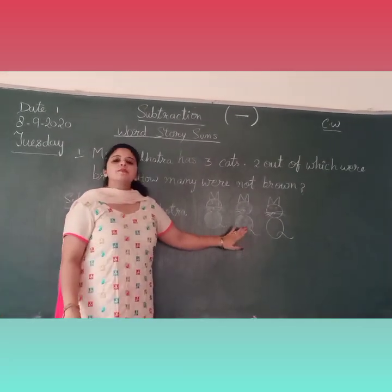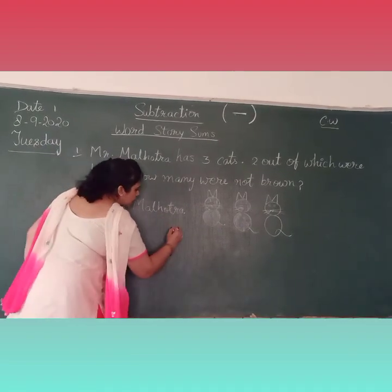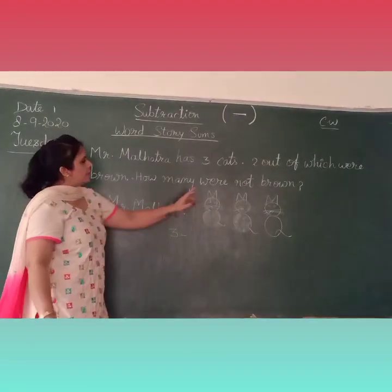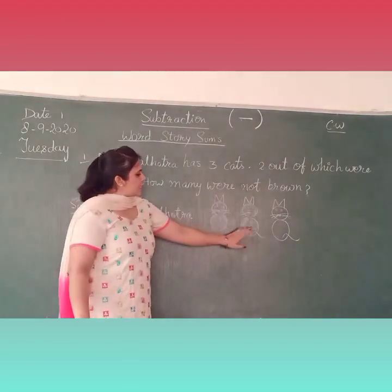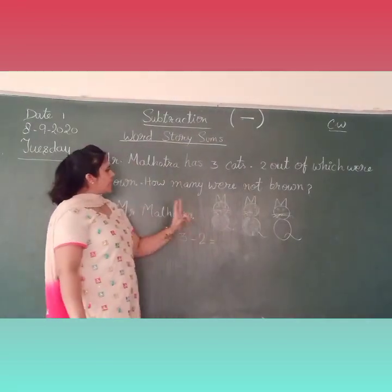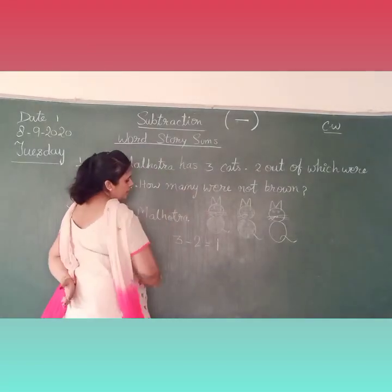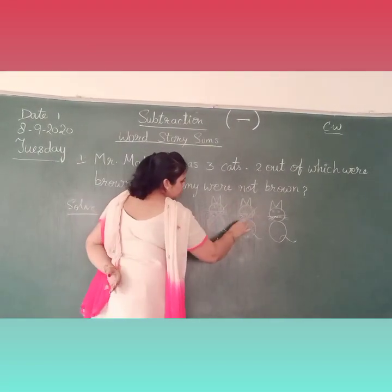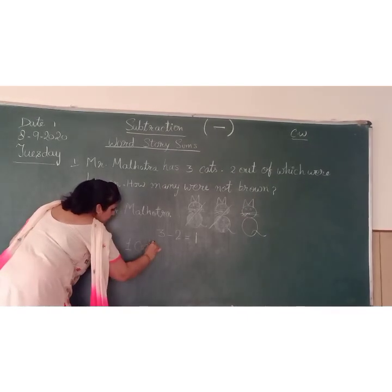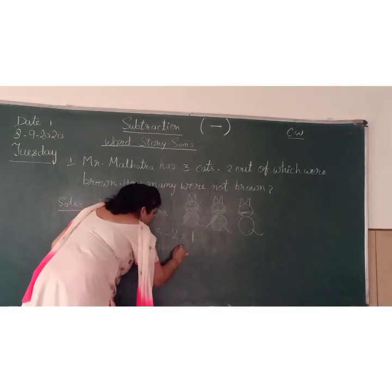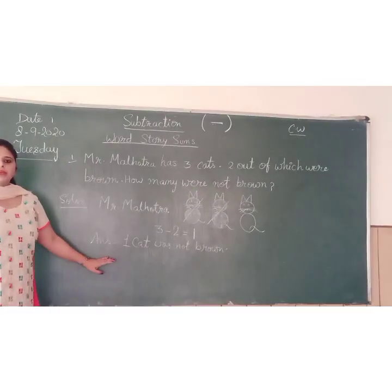Both caps were brown. And how many were not brown? 3 minus 2 is equal to 1. So 1 cap was not brown. 3 minus 2 equals 1, 2. Our answer is 1 cap was not brown. We will do the next sum.